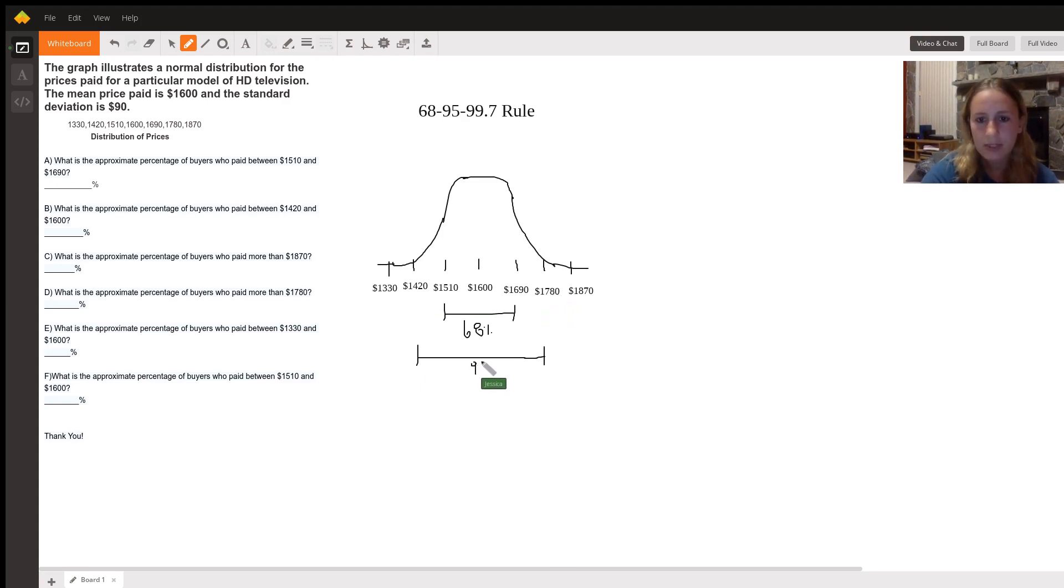And finally, based on the 68-95-99.7 rule, 99.7% of the data values are within three standard deviations of the mean. So that should write 99.7.